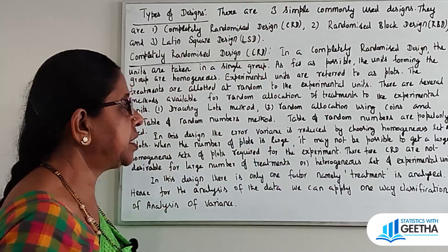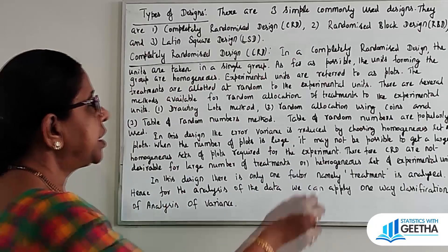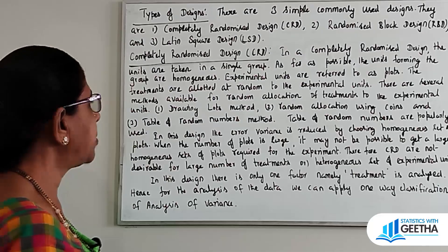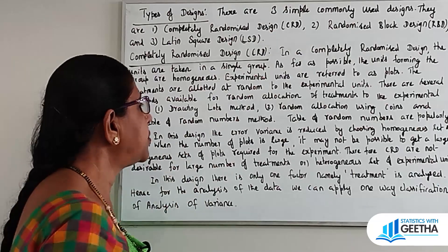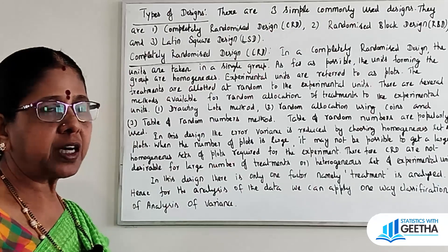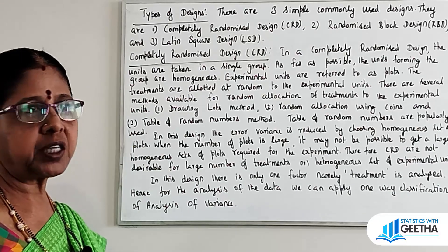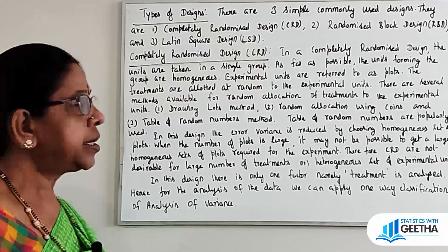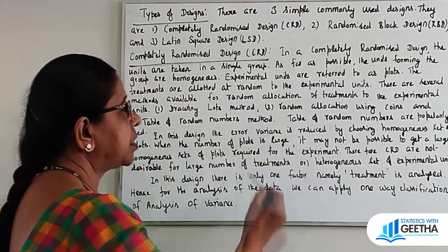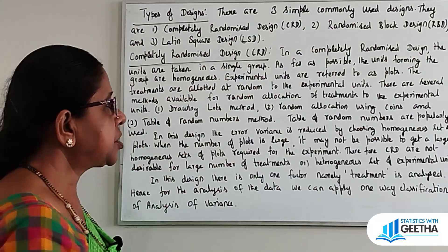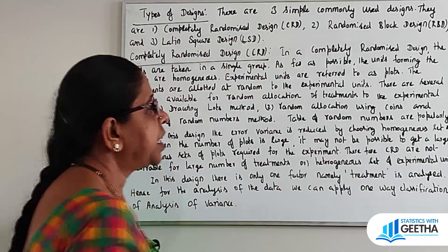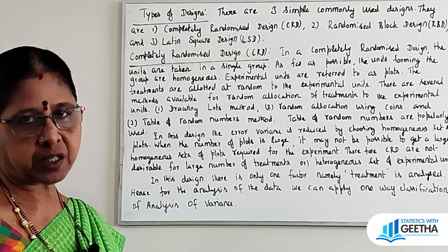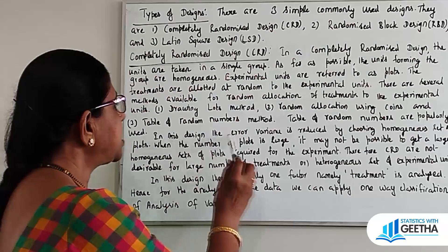The three methods of random allocation are: drawing lots method, which is the lottery method; random allocation using coins, which is the coin toss method; and the table of random numbers method. Table of random numbers is popularly used to allocate treatments to the experimental units.